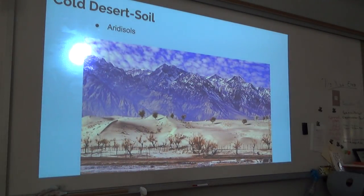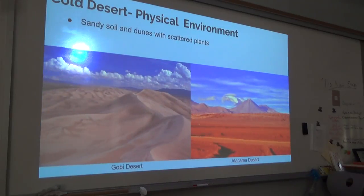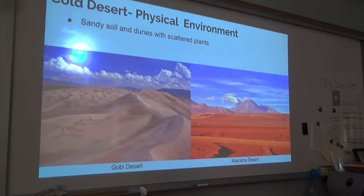Soil in cold deserts can be described as heavy, silty, salty, and porous. They are generally entisols, mostly made up of sand with very little nutrients and a high alkaline content. Cold deserts are covered by sandy soil and dunes, with scattered low-lying plants mostly comprised of shrubs. The amount of snow a cold desert receives is usually determined by its location in the world or the time of year.